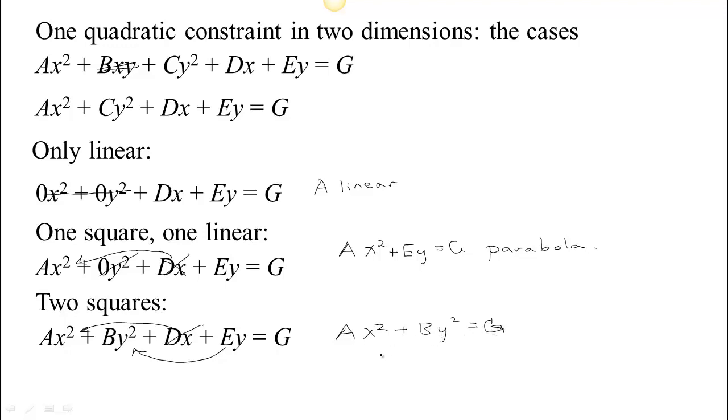Now, we could divide through by g, we could even write it in this form, x squared over g by a plus y squared over g by b equals 1. And now we know that there are actually two cases.